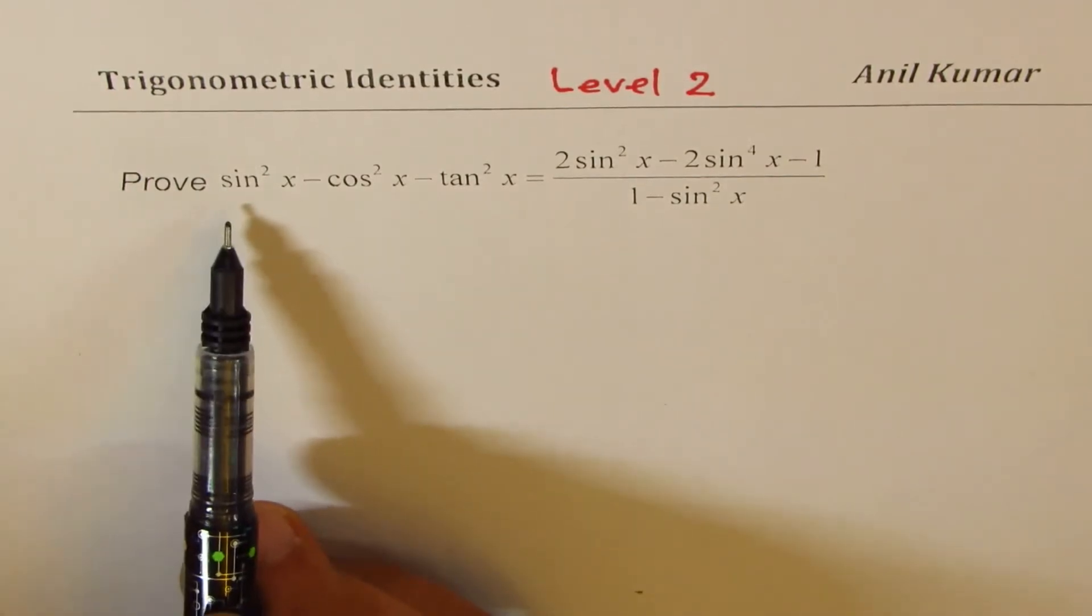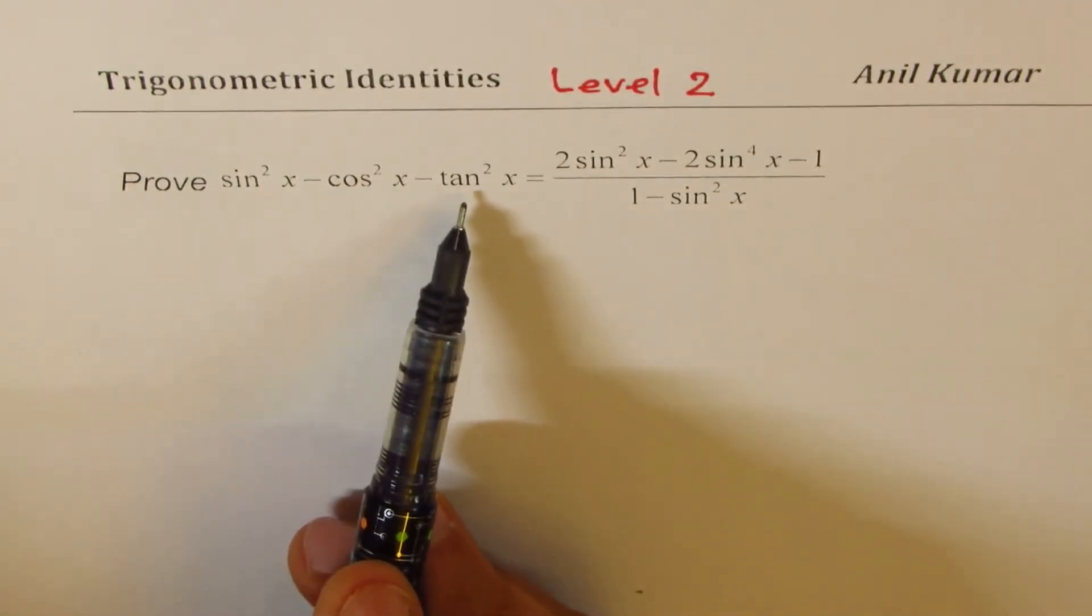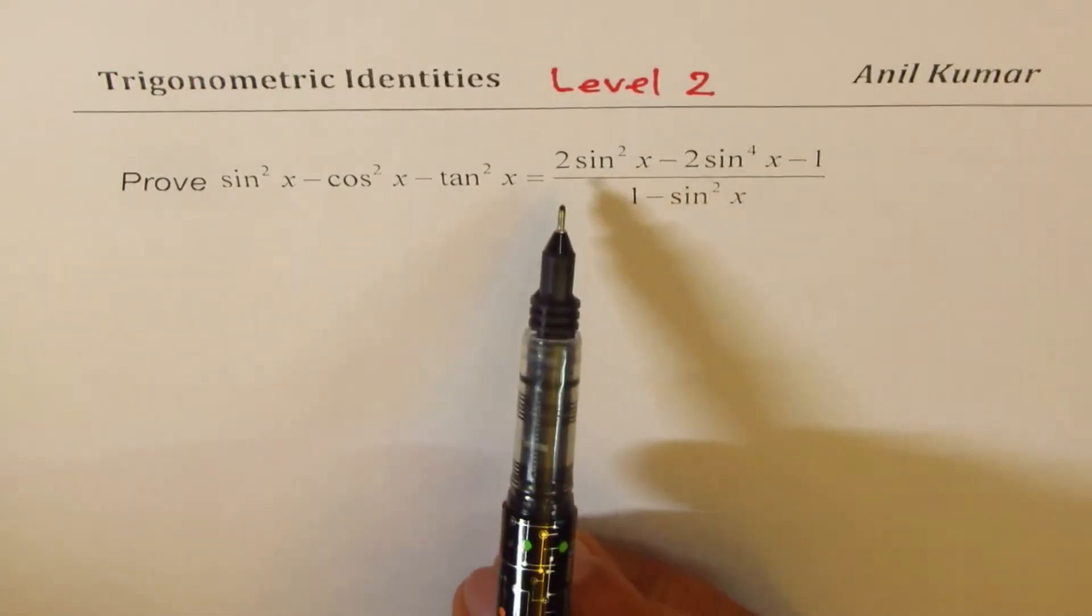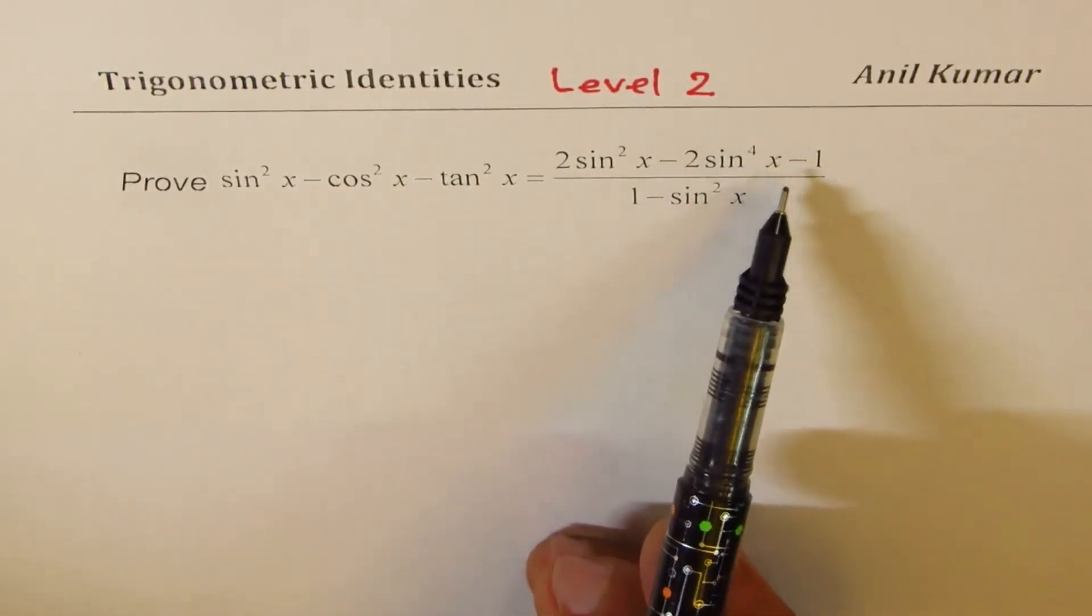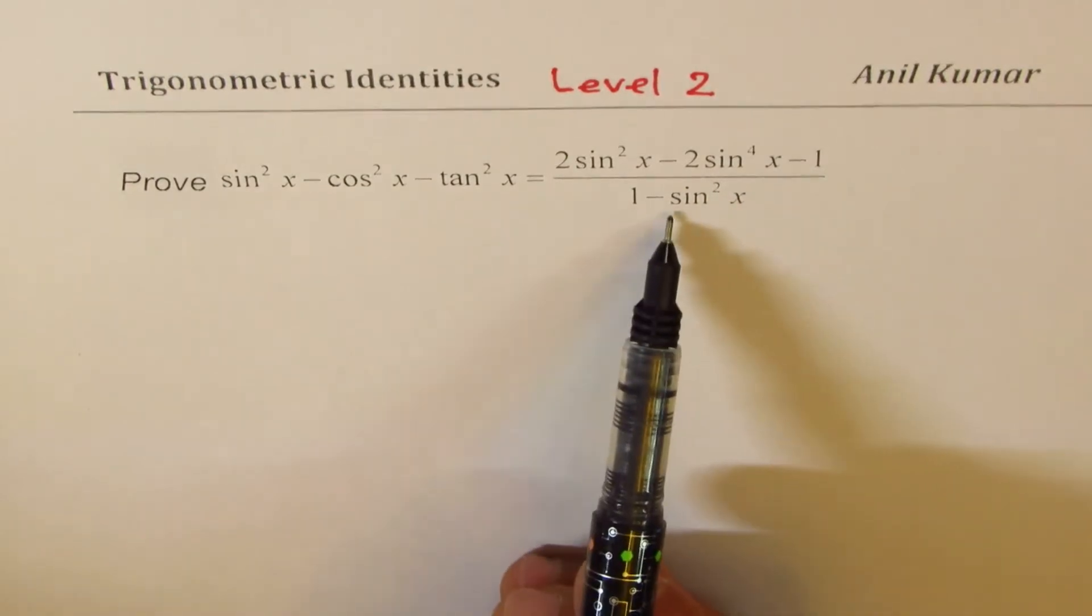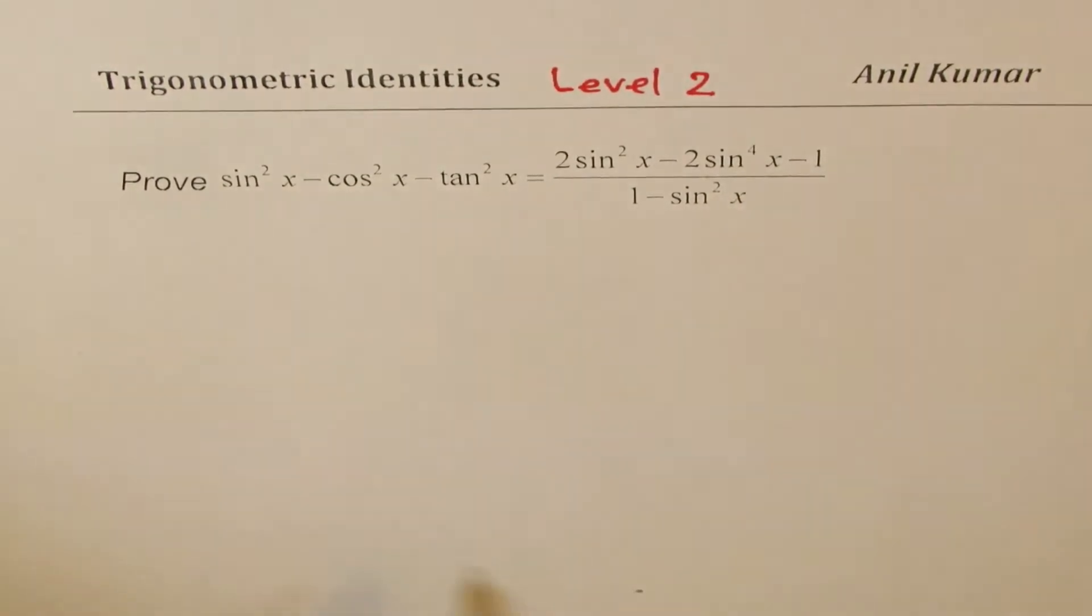You need to prove sin² x - cos² x - tan² x equals 2 sin² x - 2 sin⁴ x - 1 divided by 1 - sin² x.